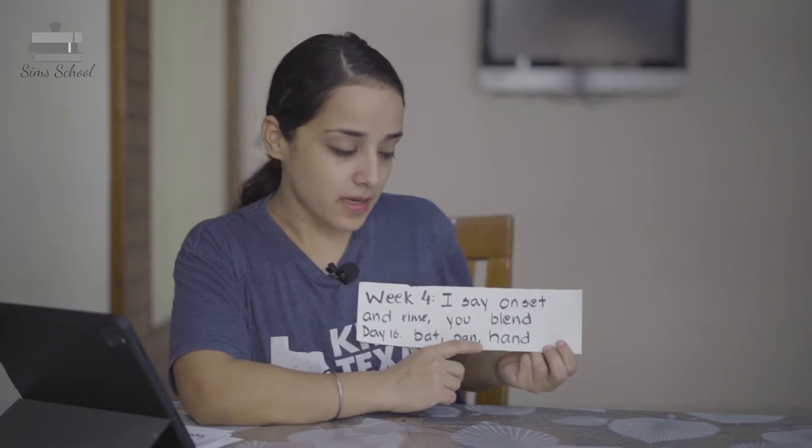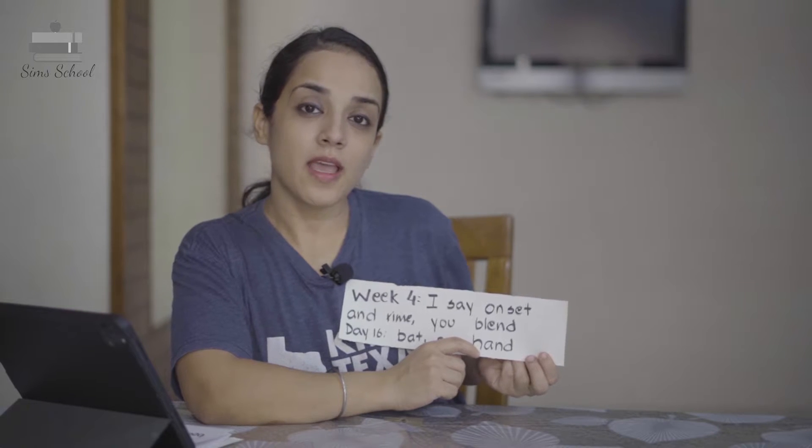...the child will blend and say 'pan'. You say 'h-and' and the child will say 'hand'. Many other words like this — you will keep segmenting them into onset and rhyme and the child will blend it. On Day 17, you will say to your child: 'I read. You segment into onset and rhyme.' And you give examples.